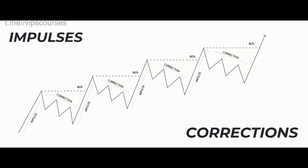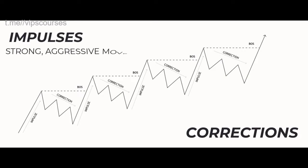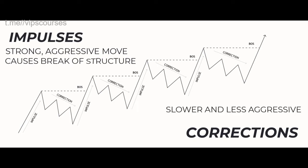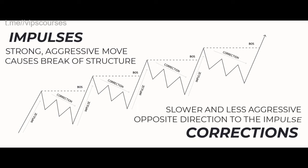This is the nature of the market. An impulse is a strong, aggressive move either up or down which causes a break of structure, or a BOS. A correction is when price pulls back slower and less aggressively in the opposite direction of the impulse.